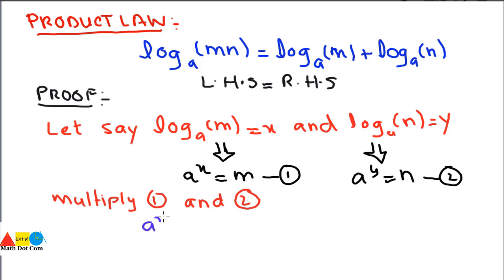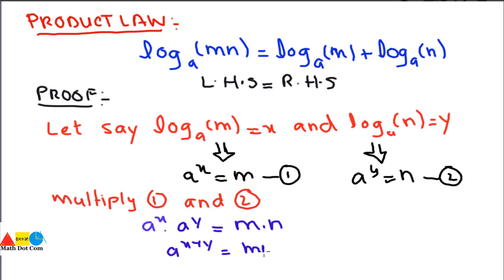Multiplying left hand side with left hand side and right hand side with right hand side gives: a^x · a^y = m · n. By the exponential rule, when bases are the same the powers are added, so this becomes a raised to power (x + y) equals m·n.